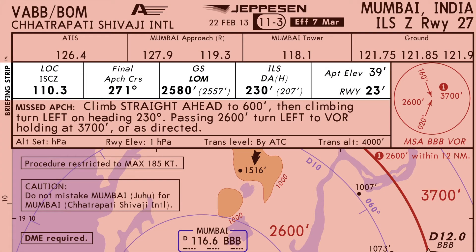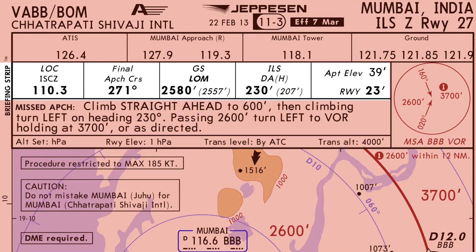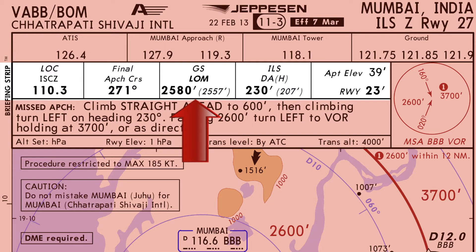The next row is for the different navigation frequencies. The first column always denotes the primary navigation frequency for the type of approach. For an ILS approach, it is always the localizer frequency. The identifier ISCZ has a frequency of 110.3. This is followed by the final approach course of the ILS, which is 271. Every ILS approach needs a mandatory altitude checkpoint on the final approach segment — a reference point for the pilot to check they are on the correct glide slope and that a false glide slope has not been captured. In this case the checkpoint is at the Locator Outer Marker (LOM), and the corresponding altitude at this point should be 2,580 feet.